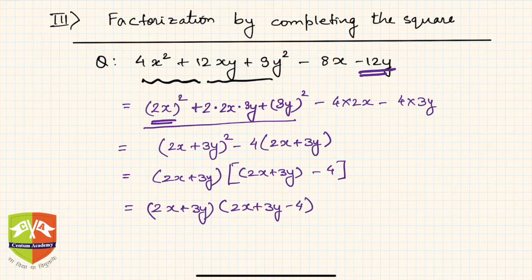Hence, the factors are (2x + 3y)(2x + 3y - 4). This is how you converted a polynomial with five terms into two factors. Let us take another example.